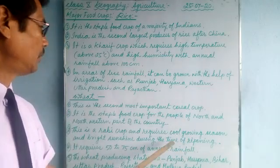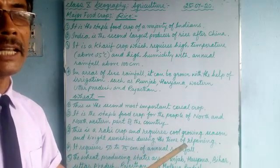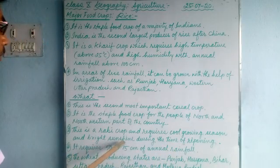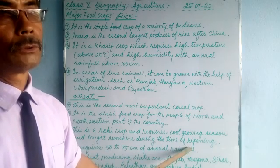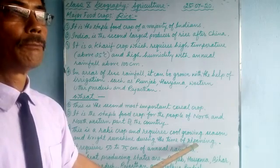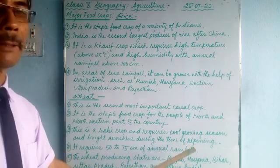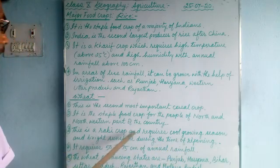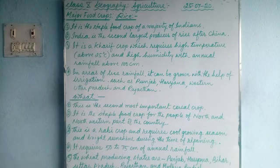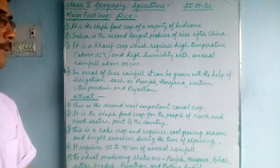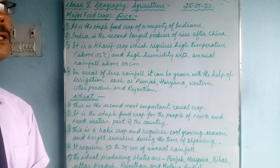As a Rabi crop, wheat requires a cool growing season during winter, and bright sunshine during the time of ripening. It requires bright sunshine from February to April, during which period it gets ripened. Otherwise it requires a cool growing season. It requires 50 to 75 centimeters of annual rainfall.